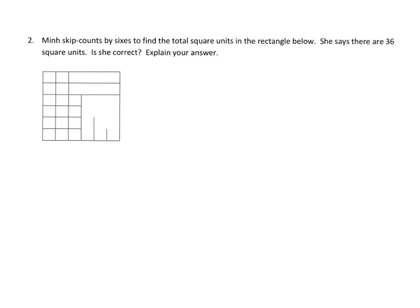For example, this problem says: Min skip counts by 6s to find the total square units in the rectangle below. She says there are 36 square units. Is she correct? She counts all the square units and believes there are 36 square units, and our job is to figure out if she's correct.